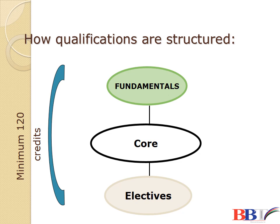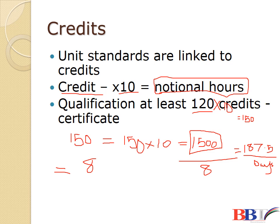Below 120 credits, it can only be a skills program or a part qualification. Above that, it meets the criteria of being a qualification. You need to know the fundamentals, core, and elective components of a given qualification. As an assessor, master each and every component. You can read more on the SAQA framework which lists the fundamentals of each qualification. Electives are optional where only a specific number of credits are required. According to SAQA standard, a credit is equivalent to 10 notional hours.